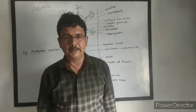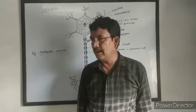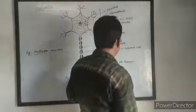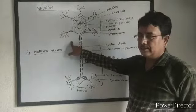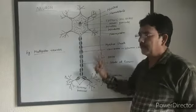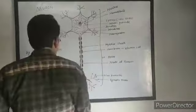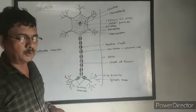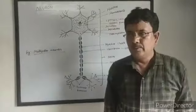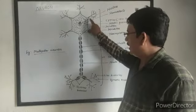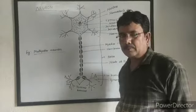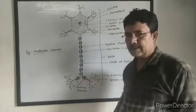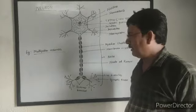All the nerves, whether they are cranial nerves, spinal nerves, brain, or spinal cord, are all made up of cells which are called neurons. Here is the figure of a multipolar neuron. Neurons are of three types: unipolar, bipolar, and multipolar. A unipolar neuron has only a cell body called cytone, and a single long process arises from the cytone, which is called the axon. If there is a cytone and one process which is the axon, then it is called a unipolar neuron.